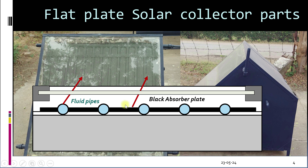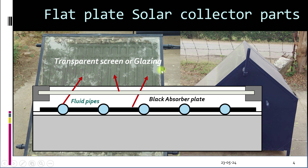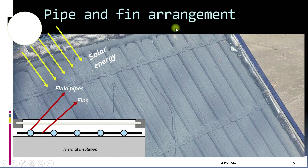The water flows inside these pipes. A glass screen is provided which allows solar radiation from the sun to pass through but does not allow heat radiation from the absorber to escape. This glass screen is known as glazing and usually consists of glass but can also be made of transparent plastic. There is thermal insulation behind the absorber plate to prevent conduction losses, and the collector is sealed properly to prevent any convection losses. The fluid pipes and absorber plate are collectively called the pipe and fin arrangement.